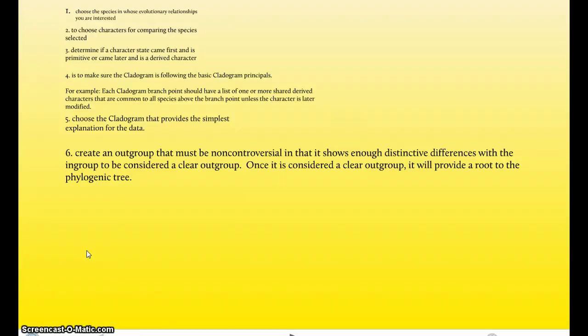And what this is saying is each cladogram really needs an ingroup and an outgroup. And that is what distinguishes everything and explains all the derived and shared characters. And the book uses the term that each cladogram needs a root to the phylogenic tree.